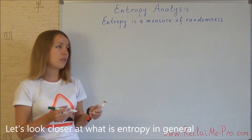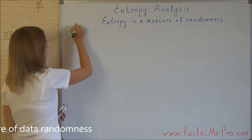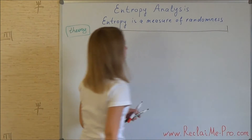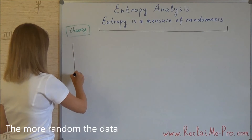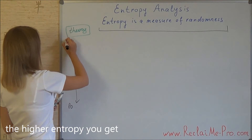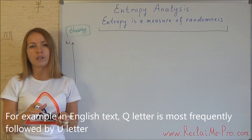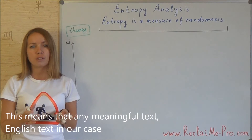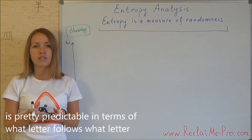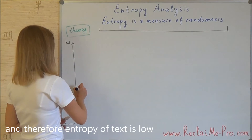Let's look closer at what entropy is in general. Entropy is a measure of data randomness. The more random the data — that is, unordered and unpredictable — the higher entropy you get. For example, in English text the letter Q is most frequently followed by the letter U. This means that meaningful English text is pretty predictable in terms of what letter follows what, and therefore the entropy of text is low.